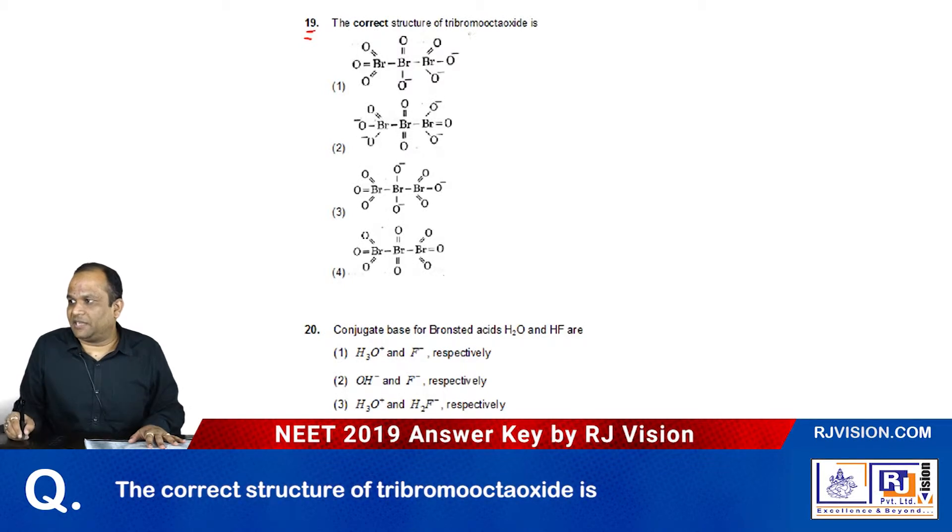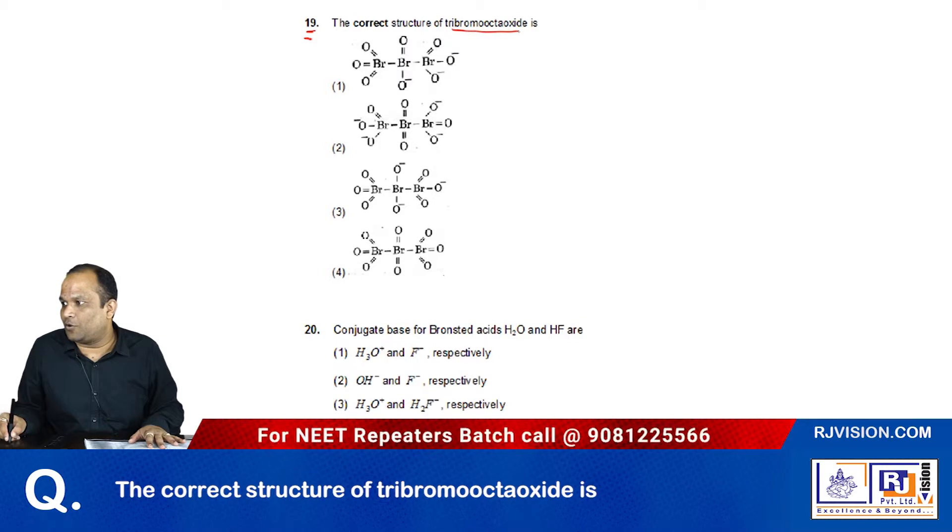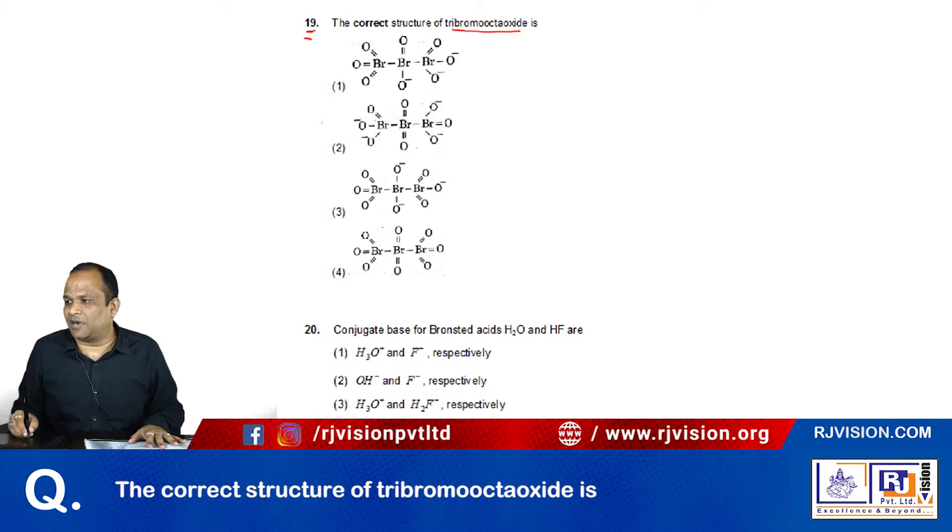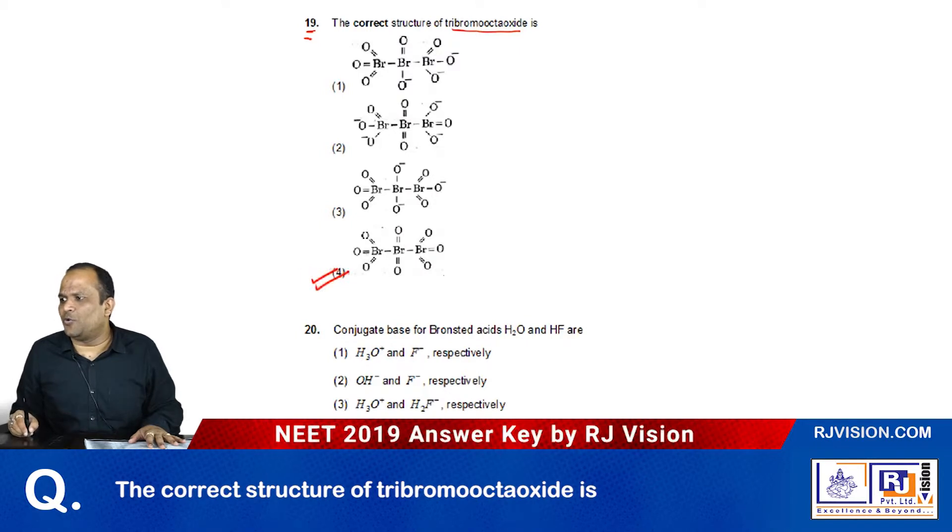Now see question number 19. This is from the chapter redox reactions about tribromooctoxide. If you see the paradox part given in redox, the actual structure is 4. There is no O minus present in this structure.